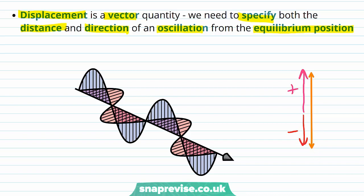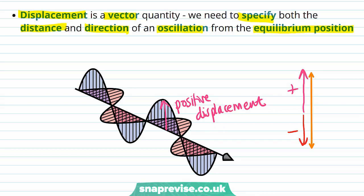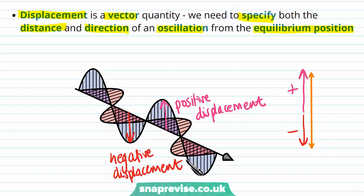On our diagram of an electromagnetic wave, this means that this direction is going to have a positive displacement, whereas if we measure the displacement in the opposite direction, it's going to be negative. This is only dependent on which direction you choose to define as positive or negative — you can't work it out just from looking at the wave.